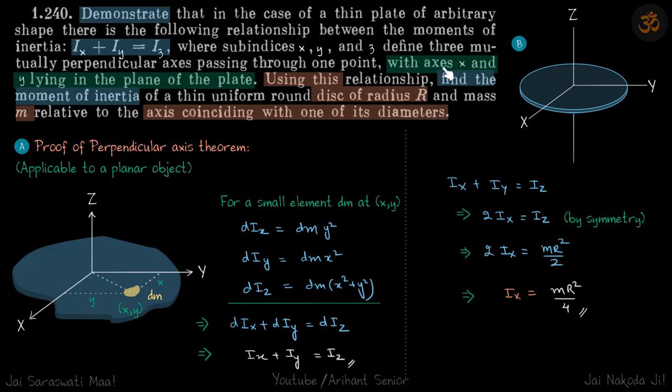With axes x and y lying in the plane of the plate, and using this relationship, find the moment of inertia of a uniform round disc of radius R and mass M about an axis coinciding with one of the diameters.